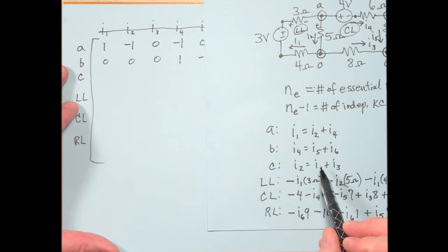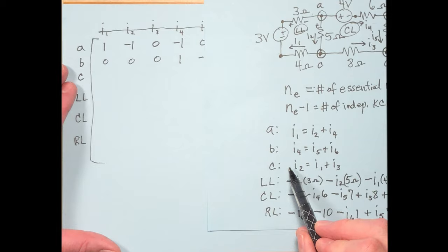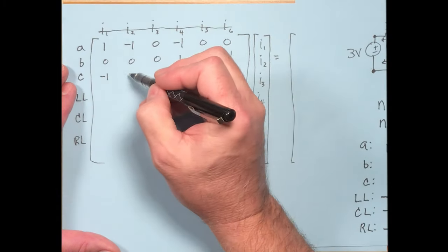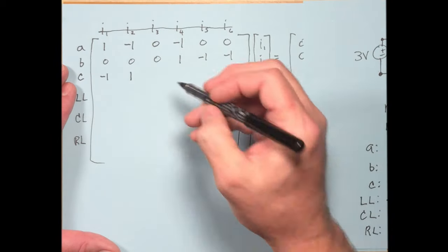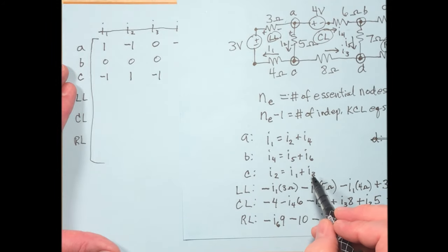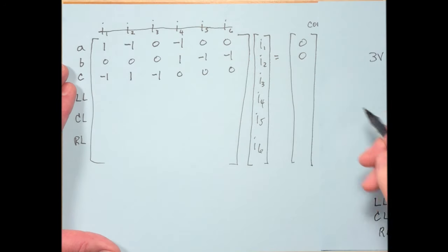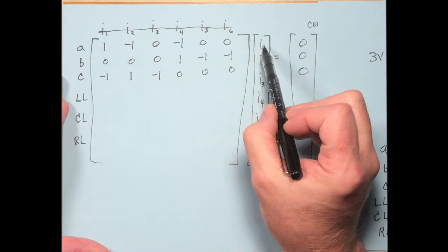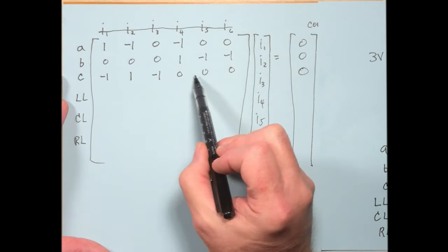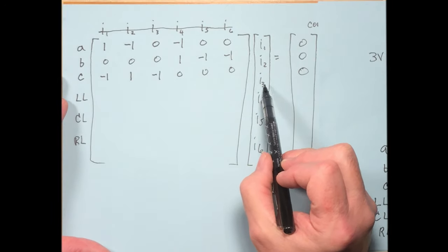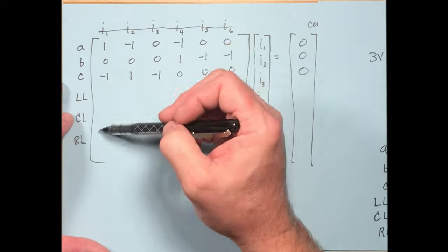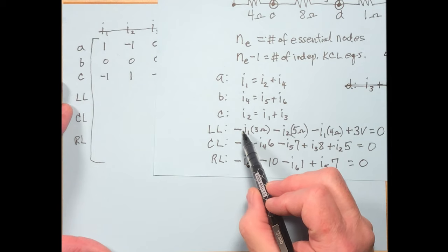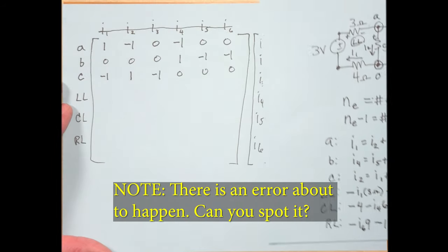You can plug these coefficients and constants into a calculator's matrix solver, an online equation solver, or a system-of-equations solver. You cannot reasonably solve a 6×6 system by hand — you need a calculator or computer. Once you get the answers for I1 through I6, you can find any other quantity in the circuit.